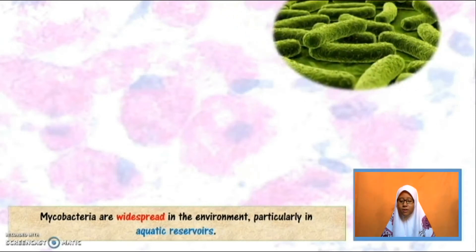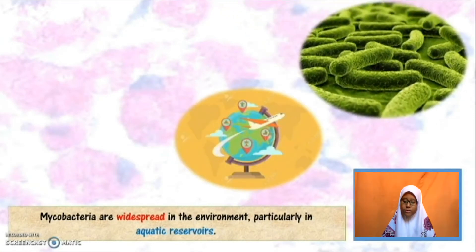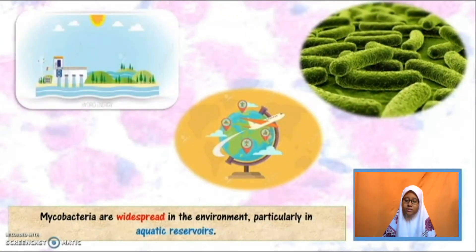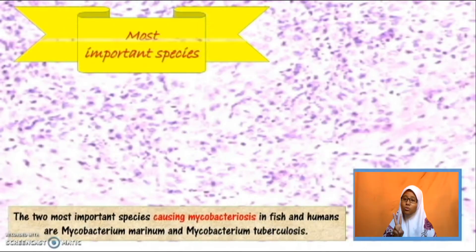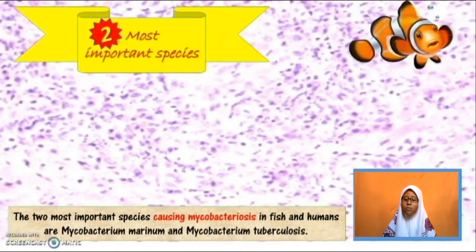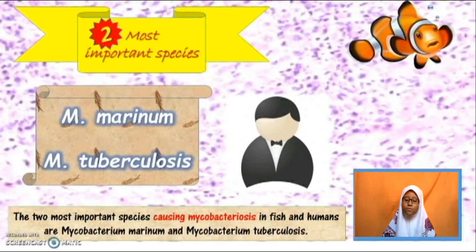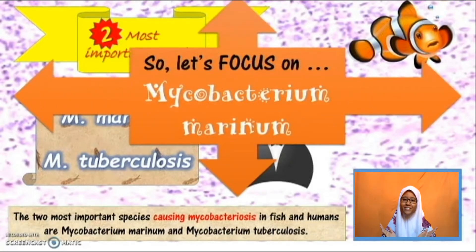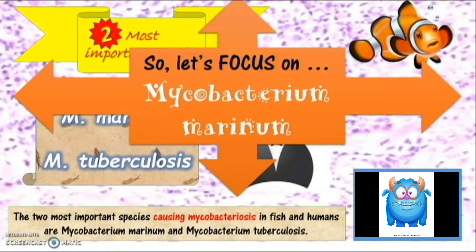Mycobacteria are widespread in the environment, particularly in aquatic reservoirs. The two most important species causing mycobacteriosis in fish and humans are Mycobacterium marinum and Mycobacterium tuberculosis. So let's focus on Mycobacterium marinum.